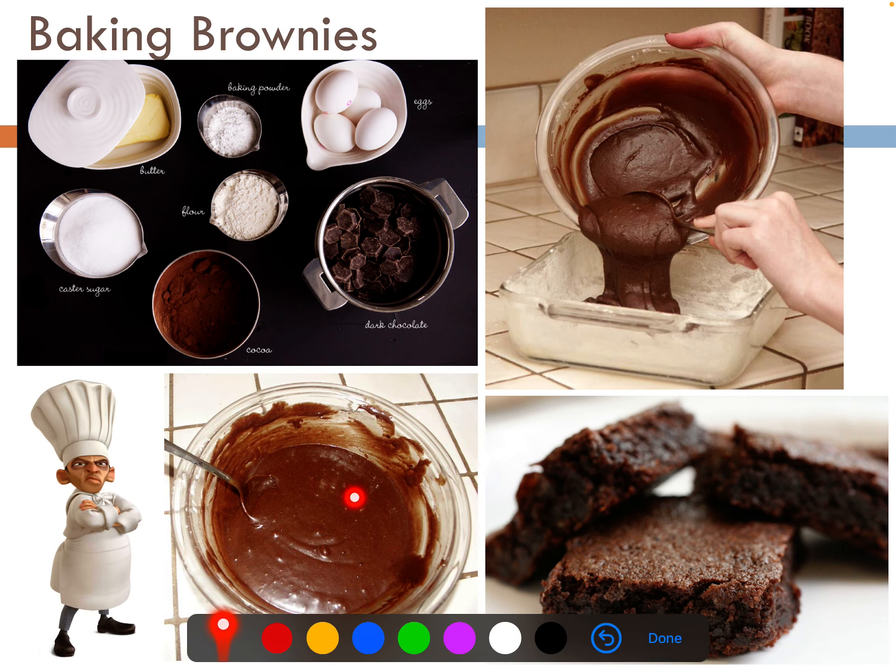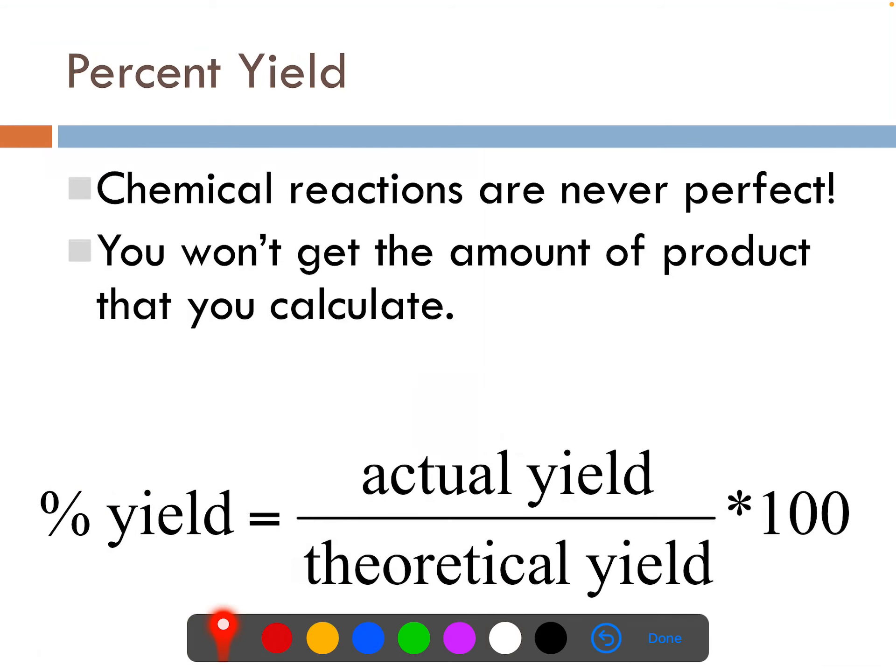Some would be on the side of the bowl, some would be on the spoon. I might lick the spoon. Some would go away. And that's how I'd like you to think about percent yield in chemistry.